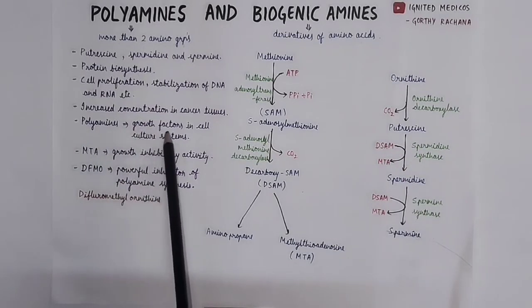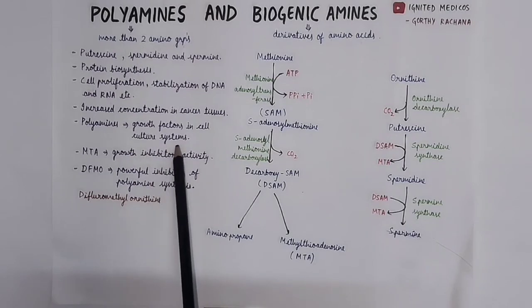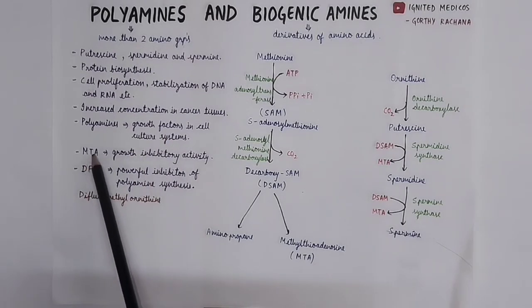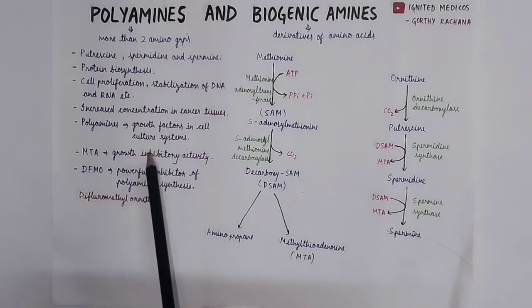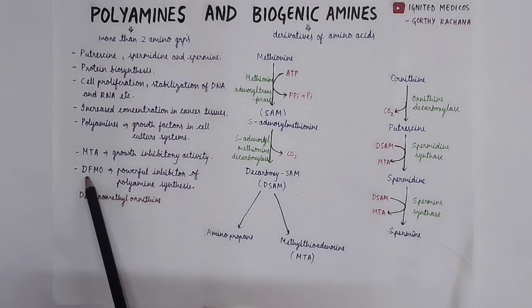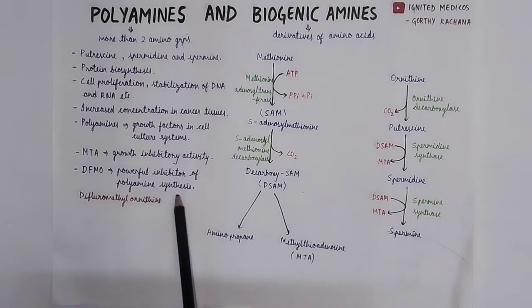Polyamines are growth factors in cell culture systems, but MTA, methylthioadenosine, has growth inhibitory activity. Difluoromethylornithine is a powerful inhibitor of polyamine synthesis.